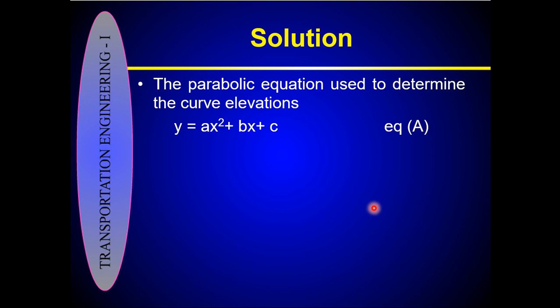The parabolic equation used to determine curve elevation is: y = Ax² + Bx + C. You can directly calculate the elevations of the vertical curve using this equation. In this example, the values of A, B, and C are already given, so you simply substitute the value of x.